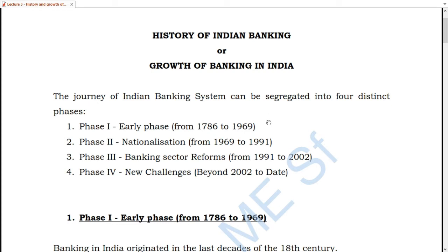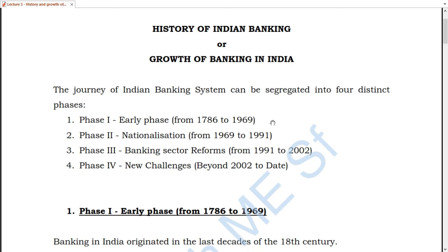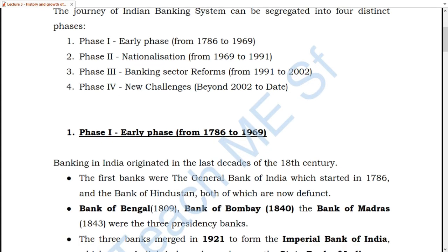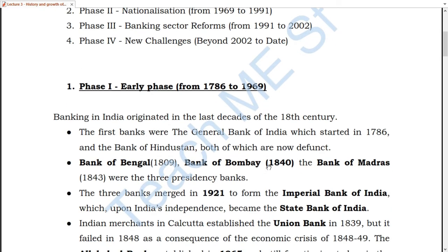The first phase of Indian Banking started from 1786 and goes on till 1969. The first banks that were created were the General Bank of India and the Bank of Hindustan. Both banks are not functional now, but these were the first two banks established in the 18th century in India.